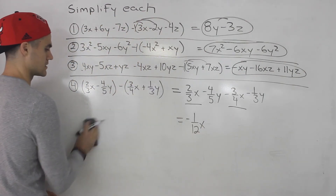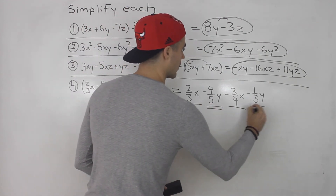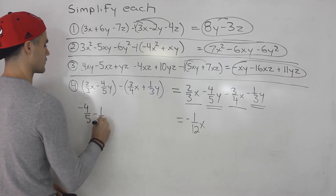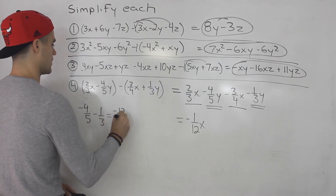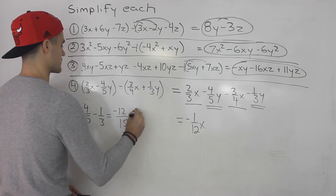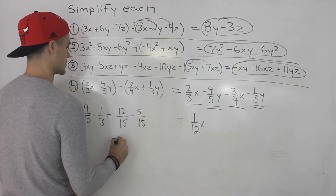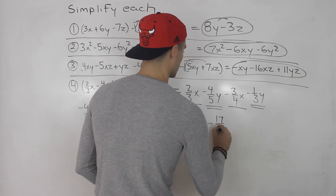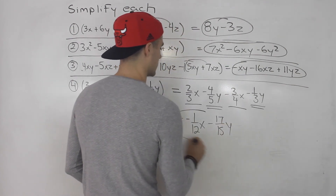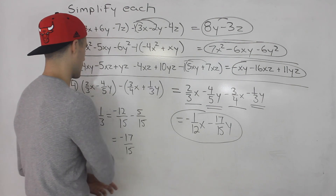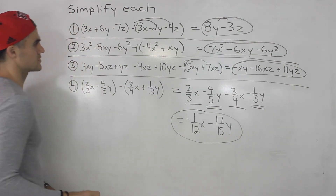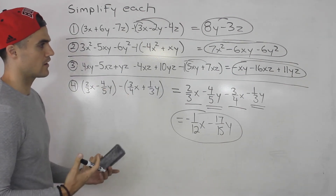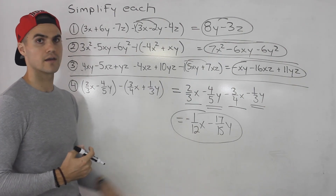For the y terms: negative 4 over 5y minus 1 over 3y. So negative 4/5 minus 1/3 equals negative 12/15 minus 5/15, which gives us negative 17 over 15. So this would be minus 17 over 15y — that's your final answer for number 4. Basically all you're doing is expanding the brackets, getting rid of them, and then simplifying all of the like terms to get a simplified expression.